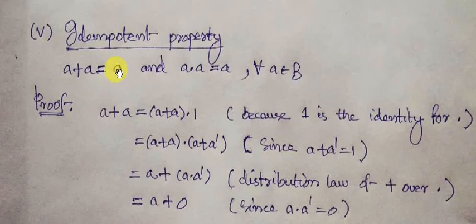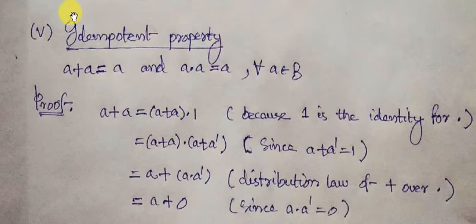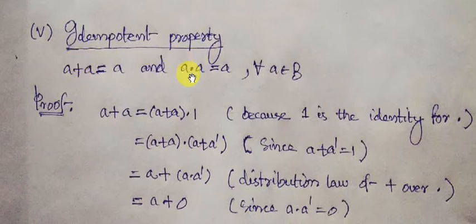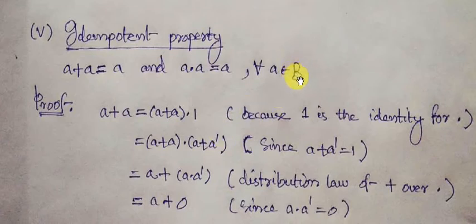In this class, we shall learn about the idempotent property in Boolean algebra. We have considered the Boolean algebra B with respect to two binary operations: plus (addition) and dot (multiplication), and with one unary operation: complementation. So B is actually the four-tuple B, plus, dot, complementation. So B is a Boolean algebra.